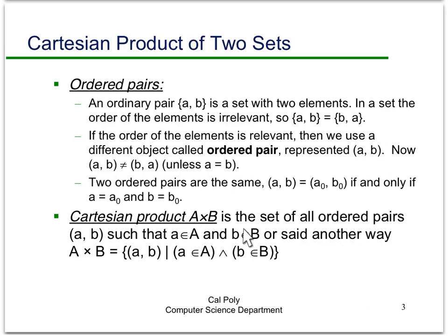Then, we can define the Cartesian product to be the set of all ordered pairs, where the first entry in the ordered pair comes from A, and the second entry comes from B. Or, said another way, A cross B, or A Cartesian product B, is equal to the set of ordered pairs (a, b), where a is in A and b is in B.